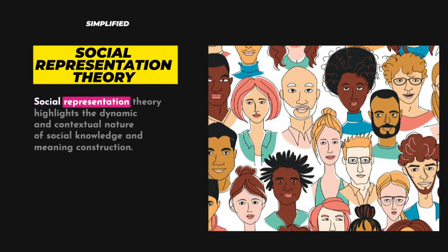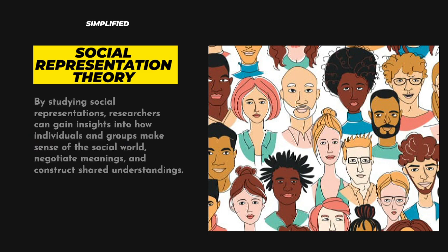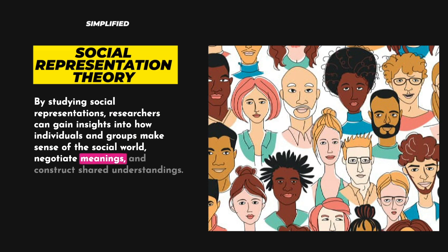Social representation theory highlights the dynamic and contextual nature of social knowledge and meaning construction. It emphasizes the role of communication, shared symbols, and social interaction in the formation and transmission of social representations. By studying social representations, researchers can gain insights into how individuals and groups make sense of the social world, negotiate meanings, and construct shared understandings.